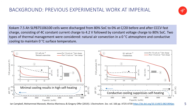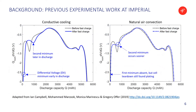First I'm going to talk about the previous experimental work done by my Imperial colleagues. What's special about this study is they did a control study: they measured the slow discharge both before and after the fast charge, as denoted by the black and red lines respectively. They also used two different types of thermal management. On the left are results from natural convection, where the cell was placed in a zero degree climate chamber, resulting in 25 degrees of self-heating during charge and cooling during discharge. On the right is the case where the cell was conductively cooled to keep the surface temperature constant at zero degrees.